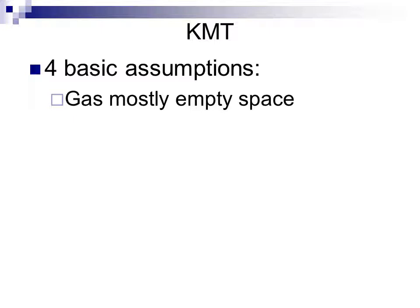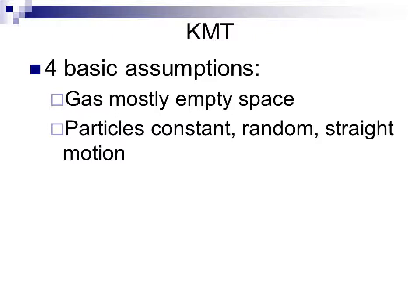The only thing that will cause a gas particle to change direction is impacting against something else — either another gas particle or the container wall. You can think of gas particles like pool balls: once the balls begin to move, the only reason they would change direction is if they were to strike either another ball or the wall of the pool table. So we consider these particles to be in constant, random, straight-line motion.